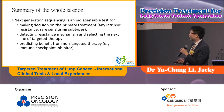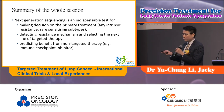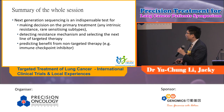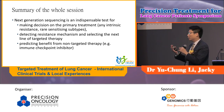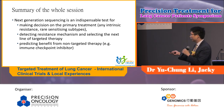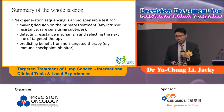In summary, next-generation sequencing is an indispensable tool for making decisions on primary treatments — to look for intrinsic resistance, to find rare sensitizing subtypes, to detect resistance mechanisms, and to select the next line of targeted therapy. It also helps us predict the benefit from non-targeted therapy such as immune checkpoint inhibitors, in the form of positive or negative predictors. That ends my talk. Thank you.